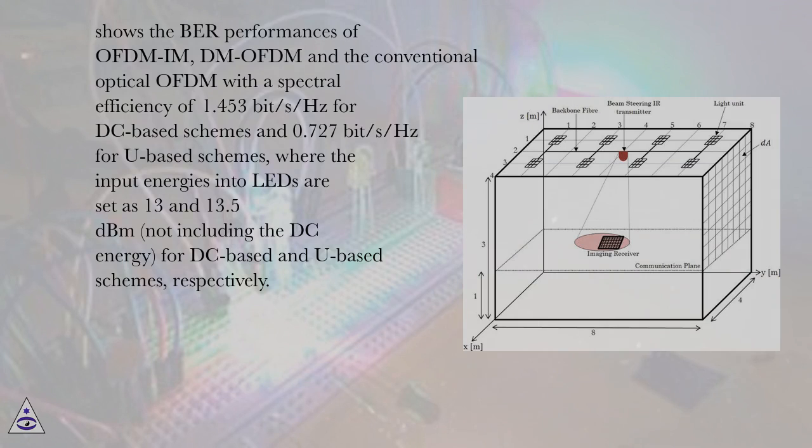where the input energies into LEDs are set as 13 and 13.5 dBm, not including the DC energy, for DC-based and U-based schemes, respectively.